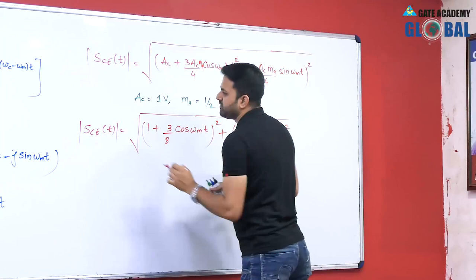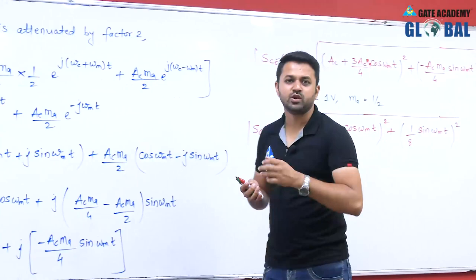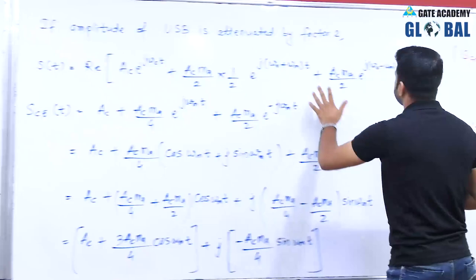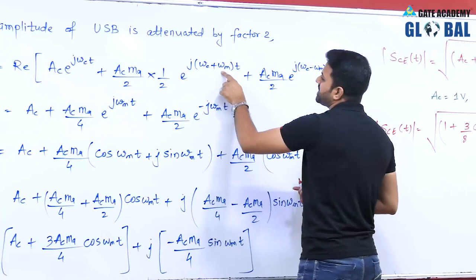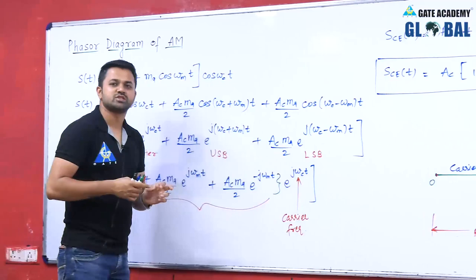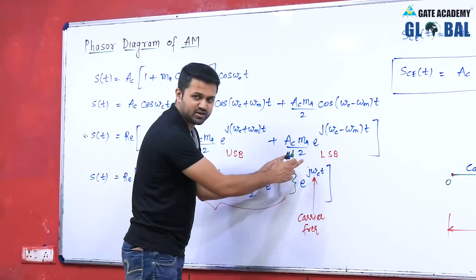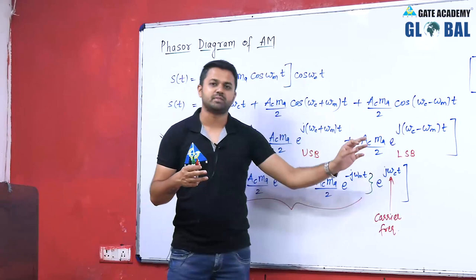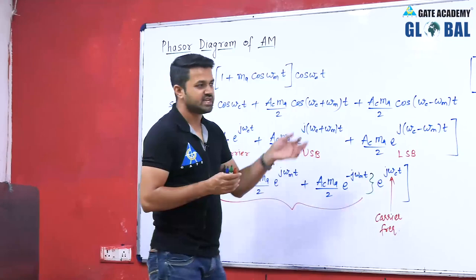This is the complex envelope magnitude when the upper sideband is attenuated by factor 2. Similarly, if the lower sideband is completely removed due to noise, eliminate that term entirely. If the lower sideband is attenuated by factor 2, divide that term by 2. If both sidebands are attenuated by factor 2, apply 1/2 to both terms. This is how you solve complex envelope questions of this type.